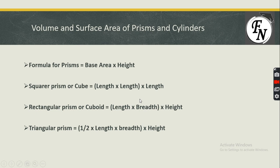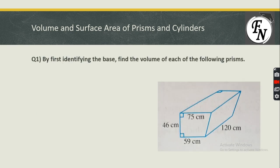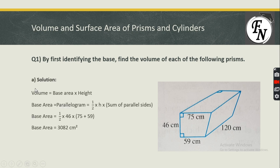Let's look at the first question. This prism has a parallelogram on its front face, and we can see it is a parallelogram throughout the shape and at the end as well. We need to calculate the base area — the parallelogram is the face that remains the same throughout, so we take it as the base. We calculate its base area first, then multiply by the height of 120 to get the volume.